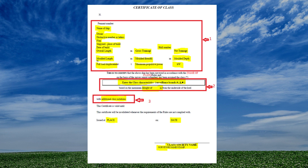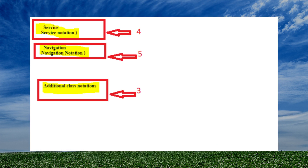Class notations may be defined as symbols, numbers, alphabets, or a combination of these which are assigned to a ship by the class society, signifying that the ship follows or complies with a certain part of the class rules. The class notations can broadly be classified into four categories: the ship's main construction notation, ship's service notation, navigational notation, and additional class notation. We will see each of these in the following slides.